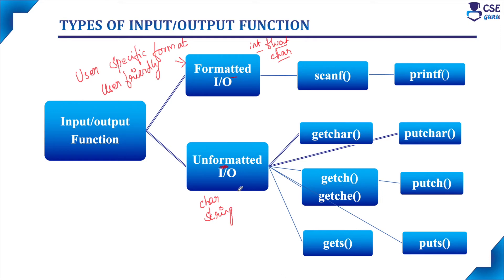The formatted input/output functions — that is, scanf and printf — use format specifiers to accept different data types from the input terminal and display output on the output screen. But unformatted input/output functions do not use any format specifiers, and are used to accept and display only character and string data types. This is the main difference between formatted and unformatted input/output functions.